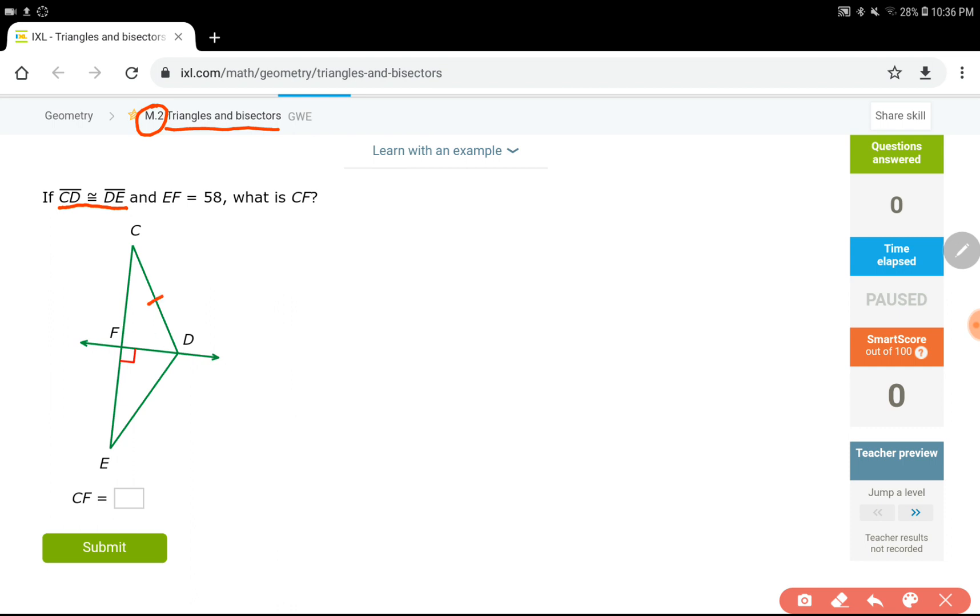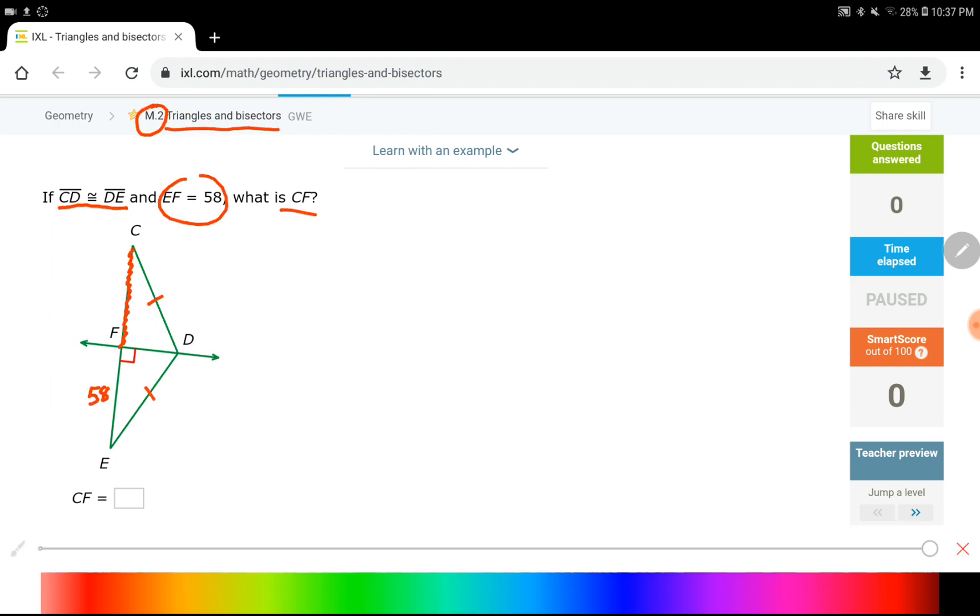Segment CD and DE are congruent. And also EF is given 58 units long. EF is 58. My question is the length of CF.